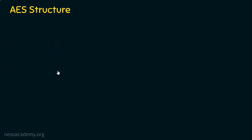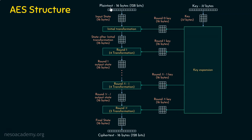Let's now see the AES structure. You can see the input — the plaintext — which is 128 bits. This plaintext is going to be converted into the ciphertext, which is also 128 bits. Now, the input is stored in a state array. There is a 16-byte state array, also referred to as an input state array, where these 16 bytes or 128 bits are stored. Since 1 byte equals 8 bits, 128 bits means 16 bytes — a 4×4 byte array storing 16 bytes of information.